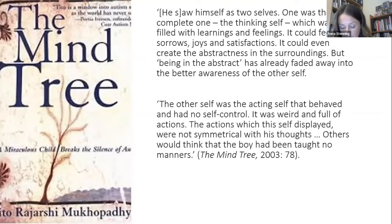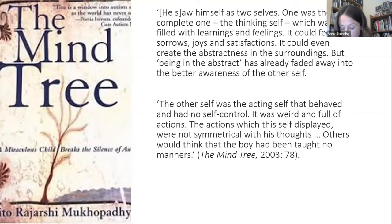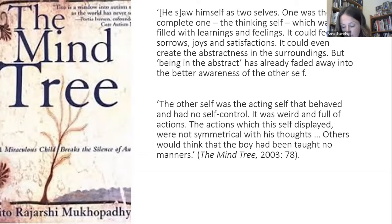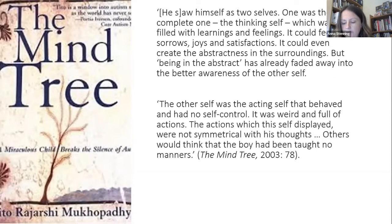Disability theorist Rosemary Garland Thompson has argued that while the body is often how we are recognized as belonging or not belonging to a particular group, it can also be the source of renewed understandings. Tito described many experiences of being removed from educational and social settings because of his tendencies to move and flap his hands, but these experiences feed into his life writing. For Garland Thompson, our outsider status is not inherent to our embodiment but a result of identification by others in a particular social and material location.